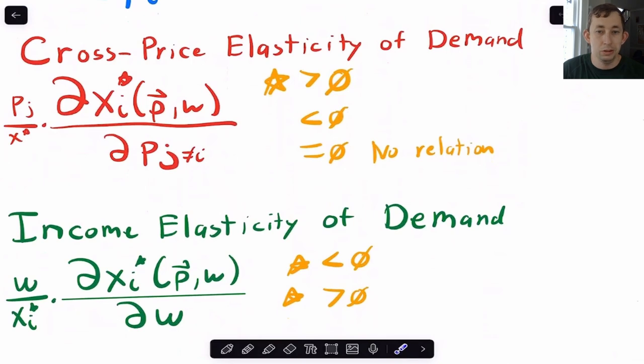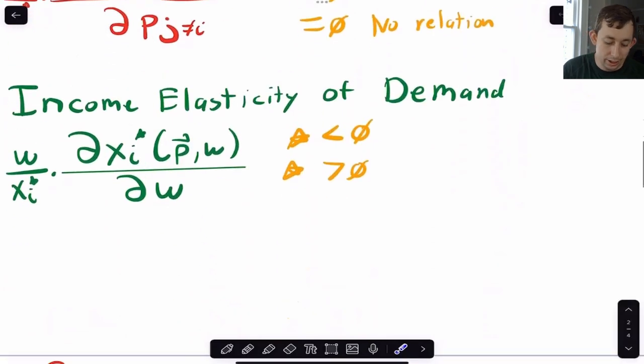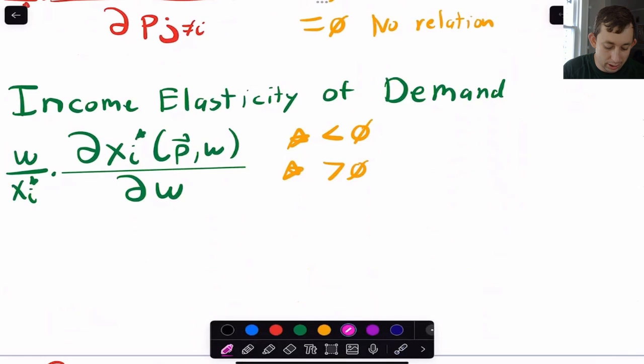But again, we're just thinking about how to calculate this today. So for income elasticity of demand, same thing, where instead of talking about substitutes and complements, we're going to talk about how if we get a negative income elasticity of demand, that means that this good is going to be inferior. And if we get a positive elasticity, that means this is going to be a normal good.